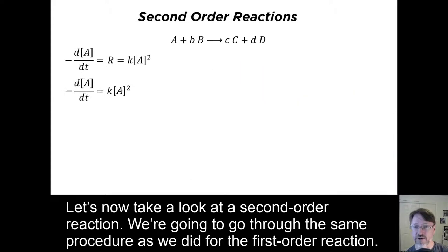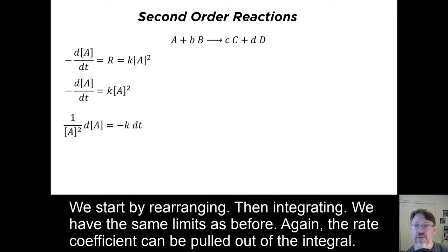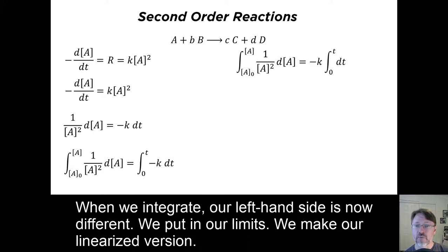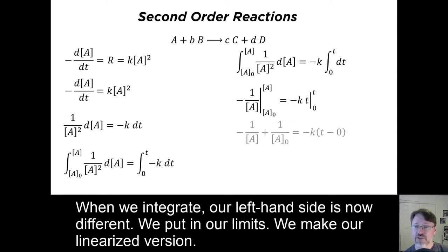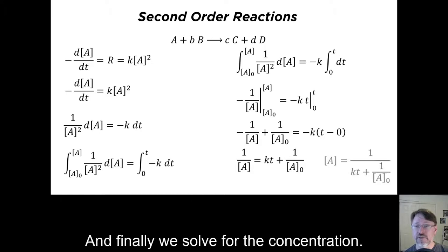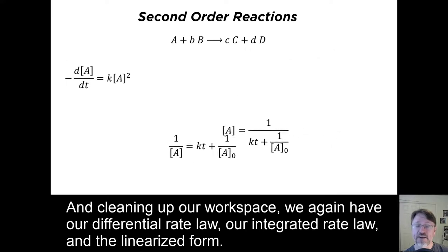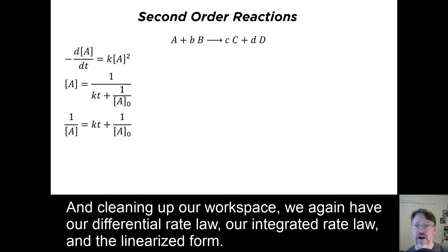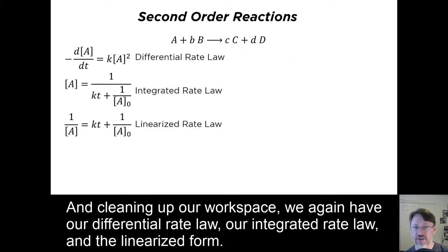Let's now take a look at a second order reaction. We're going to go through the same procedure as we did for the first order reaction. We start by rearranging, then integrating. We have the same limits as before. Again, the rate coefficient can be pulled out of the integral. When we integrate, our left-hand side is now different. We put in our limits, we make our linearized version, and finally we solve for concentration. Cleaning up our workspace, we again have our differential rate law, our integrated rate law, and the linearized form.